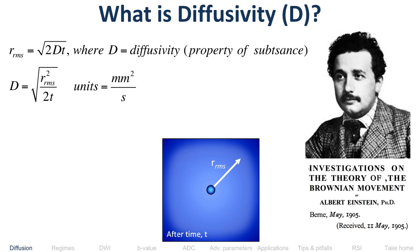The choices are: investigations of the theory of Brownian movement, the theory of special relativity, and the photoelectric effect. Does anyone know which won the Nobel Prize? Jonathan knows the answer — yes, it's the photoelectric effect.